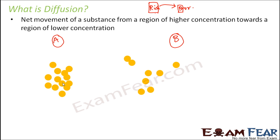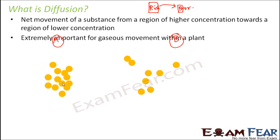This concept is extremely important for gaseous movement within a plant, because inside a plant gases like oxygen and carbon dioxide also need to be transported from one part to another. On the leaves of a plant there are small pores called stomata, and through stomata, gaseous exchange happens with the atmosphere. But gases taken in by stomata also need to be supplied to other plant parts like roots.